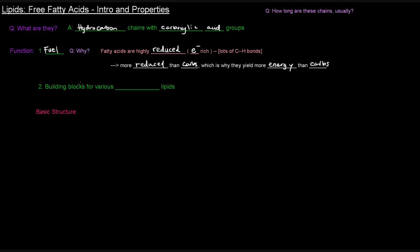Another function of theirs is that they are the building blocks for various membrane lipids, and we'll see that later in other videos on membrane lipids. So what does this mean though? Hydrocarbon chains with carboxylic acid groups — what does that structure kind of look like? Well, if you imagine R as being some hydrocarbon chain and then the rest being a carboxylic acid functional group, this is a fatty acid — this is a general structure. And this R group of course can be any hydrocarbon chain.